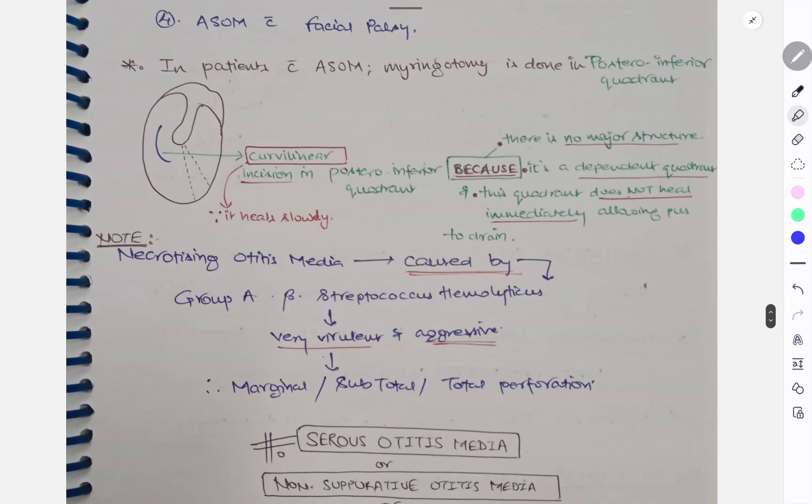Now there is one thing called necrotizing otitis media and that is caused by Group A beta-hemolytic Streptococcus and it is very virulent and aggressive organism and it will cause marginal, total, and subtotal perforations. Thank you so much. Wait for the CSOM class.